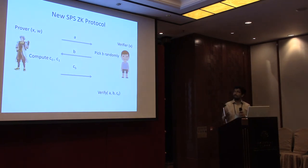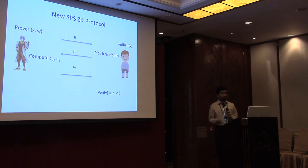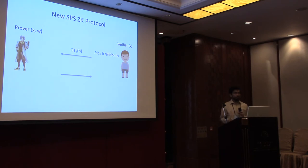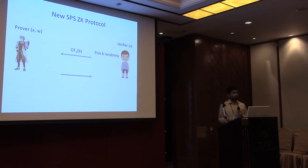Now we have a two-round OT and a three-round zero-knowledge protocol. How do we get rid of the first round? The idea is that instead of the prover sending the first round message, the verifier's challenge bit b is no longer sent in the clear. Instead, this bit b is hidden via the oblivious transfer — the verifier picks a random challenge bit b and sends it via the OT protocol.